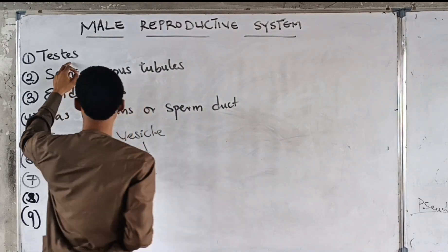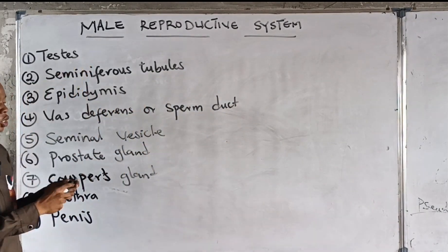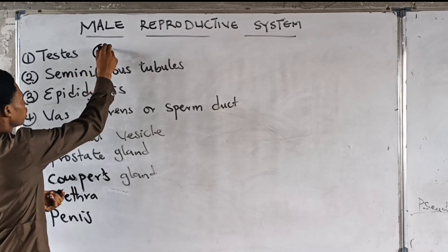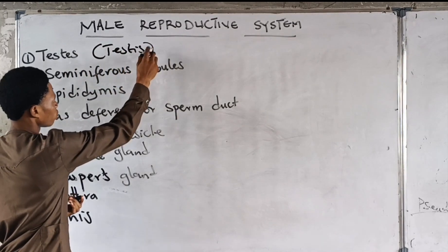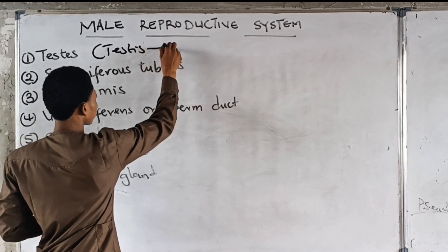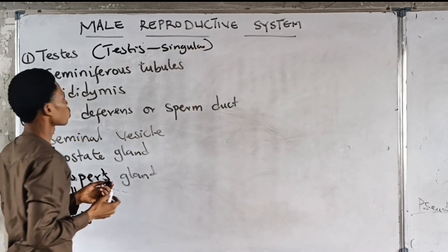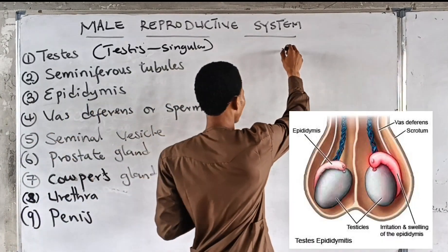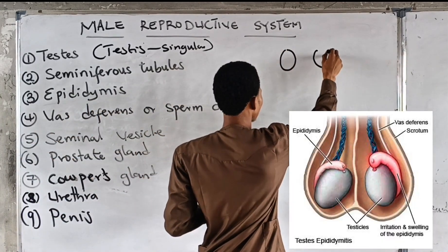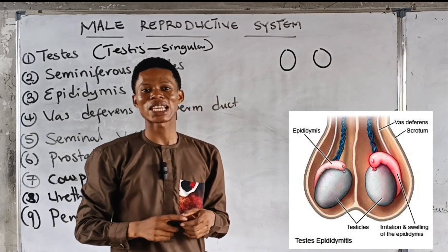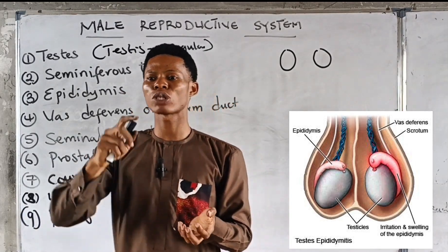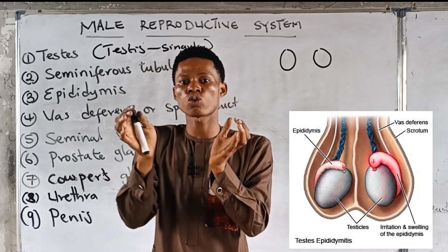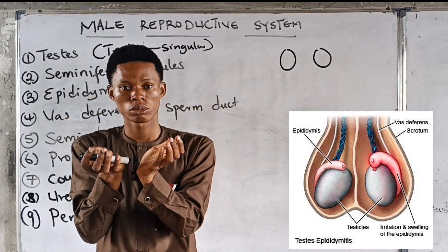The first one is the testis. Please take note that 'testes' with ES is plural, while 'testis' is singular. The testis is an ovoid-shaped structure — just like what we just finished looking at. All male mammals have two of them. The testis is located in the scrotal sacs, and the scrotal sacs form the scrotum.